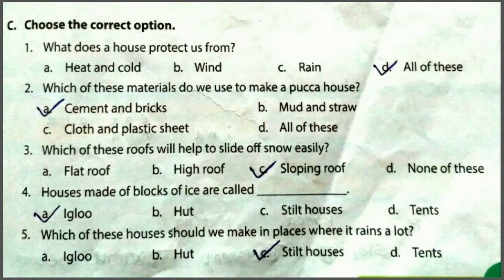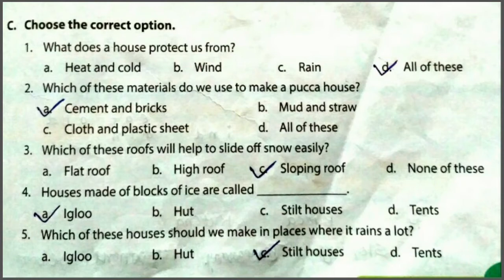Third MCQ: which of these roofs will help to slide off snow easily? Options: flat roof, high roof, sloping roof or none of these. तो easily snow को slide off करने के लिए sloping roof help करता है, क्योंकि वो दोनों तरफ झुका हुआ होता है इसलिए snow easily गिर जाता है. So answer is sloping roof.